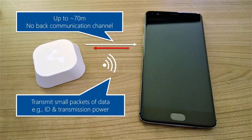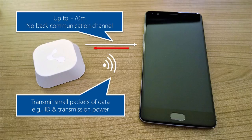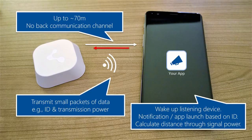How far does a Bluetooth beacon reach? It's around 70 meters on average. Of course it depends on how much power you invest. Some beacons allow you to configure the transmission power — the more power you use, the bigger the range, but the shorter the battery life. There's no back communication channel, like a lighthouse. Bluetooth beacons just tell you 'I'm here' or transmit specific information, but it's not meant for the phone to connect to the beacon and start talking to it. It's just really the beacon sending out information.